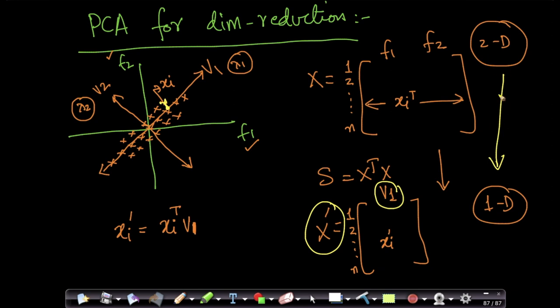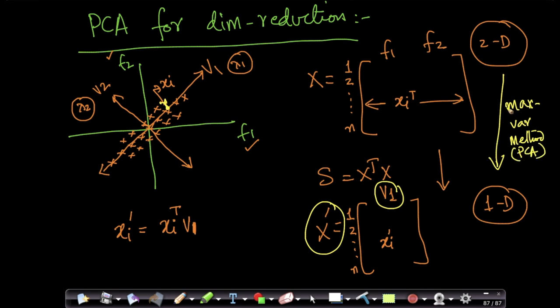This type of dimensionality reduction is called the maximum variance method, which is also known as PCA. In PCA, when I want to reduce data from 2D to 1D, this is how I do it.